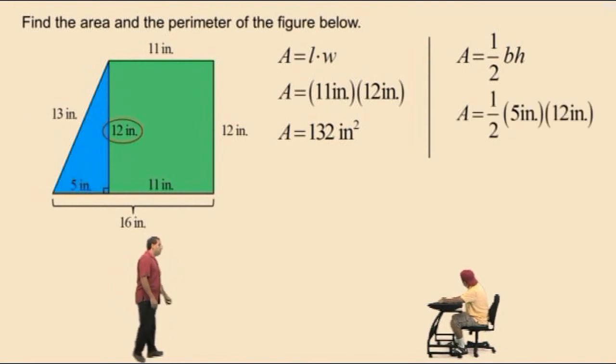Our height is 12 inches. And therefore, to calculate 1 half times 5 times 12, we'll first multiply 5 times 12, which is 60. And 1 half times 60 or a half of 60 is 30. Don't forget our units is 30 inches squared. Remember, area is two dimensions.